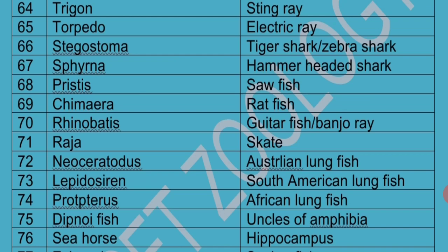Seahorse is scientifically called Hippocampus — Seahorse is the common name. Because its face looks like a horse, it is called Seahorse. Hippocampus exhibits parental care; especially the male has a brood pouch inside which the female lays eggs.